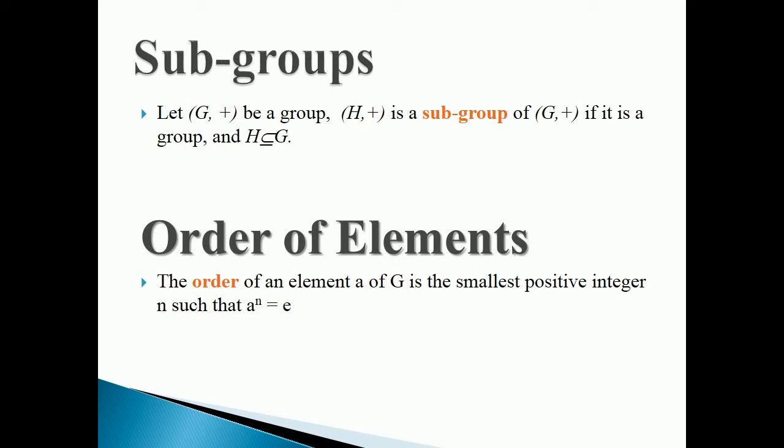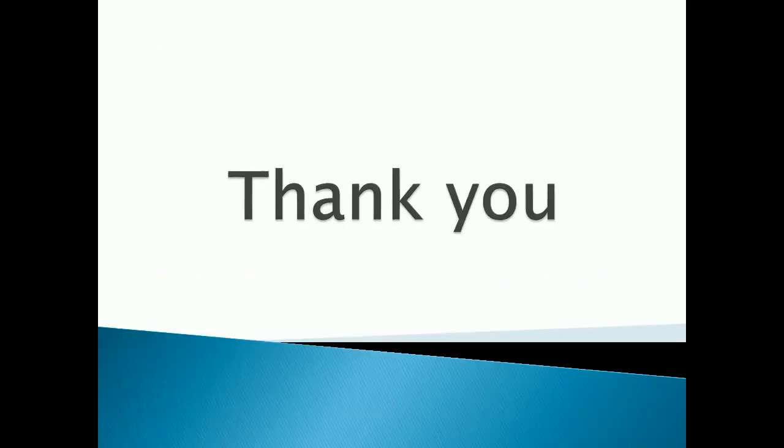Order of elements: The order of an element a of G is the smallest positive integer n such that a^n = e. Thank you.